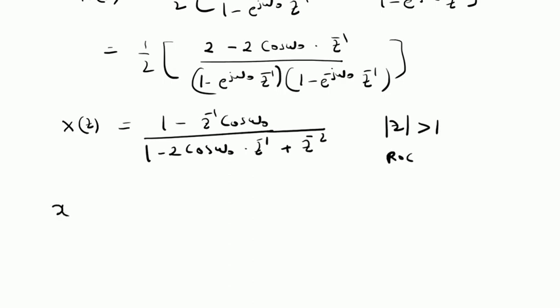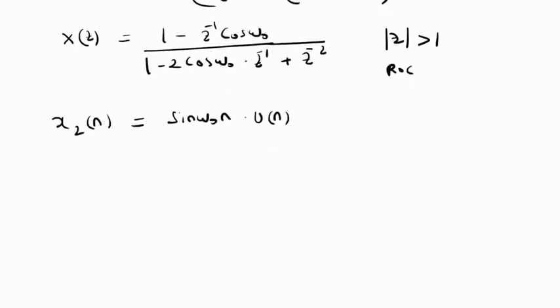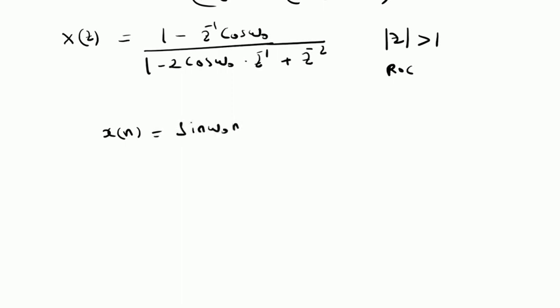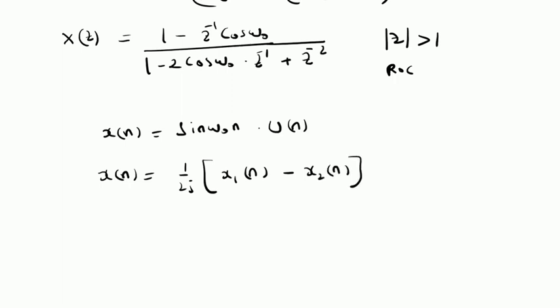Now for a second signal, x(n) defined as sin(omega naught n) times u(n) — a causal sinusoidal signal — the Z-transform can be calculated along similar lines. We write x(n) as 1/(2j) times [X1(n) - X2(n)], where X1(n) is e^(j omega naught n) u(n) and X2(n) is e^(-j omega naught n) u(n).